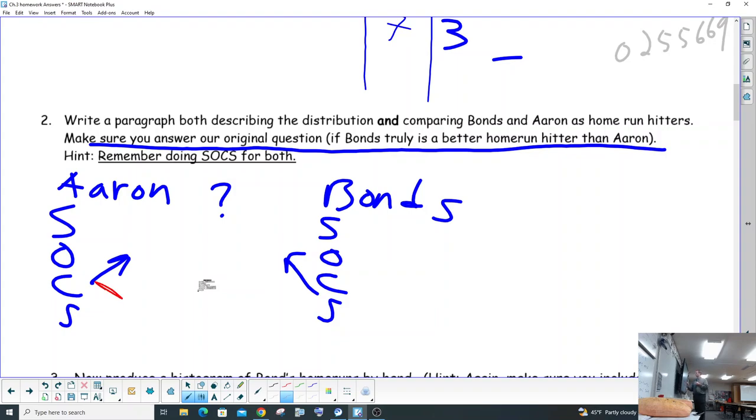Don't forget that SOCS is shape, if there are any outliers, center - center stands for the average and the median, which we worked on last quarter. So you should be hopefully pretty good at that by now. And then we have the spread. And of course, spread is the maximum minus the minimum. So you're going to find both the spread for Hank Aaron and Barry Bonds.